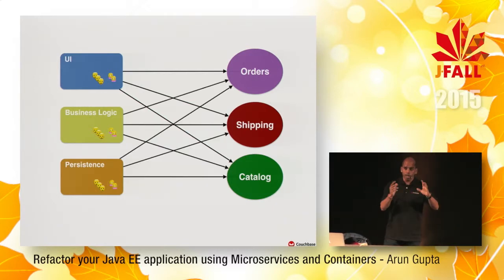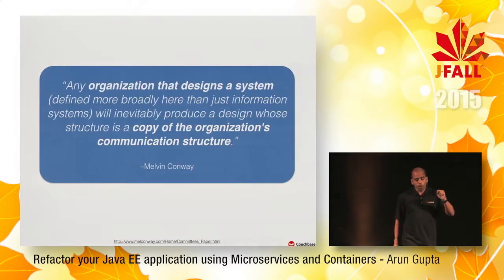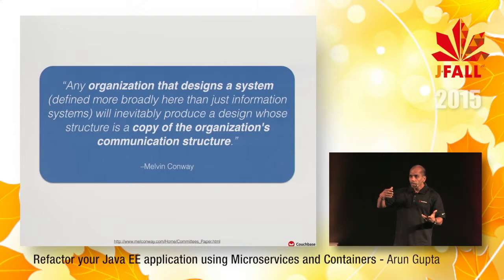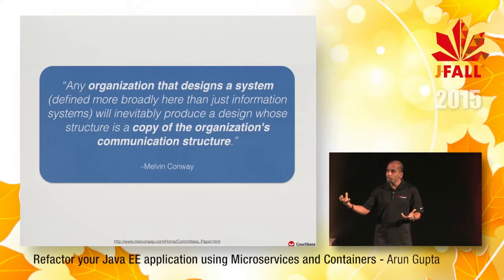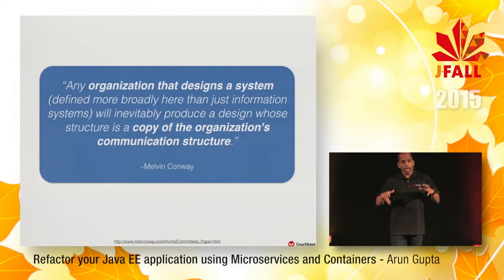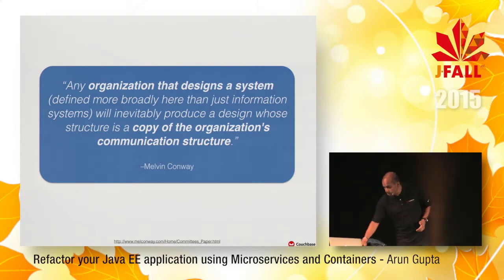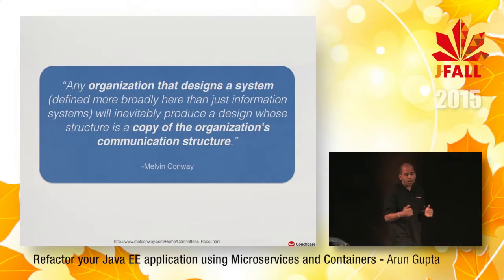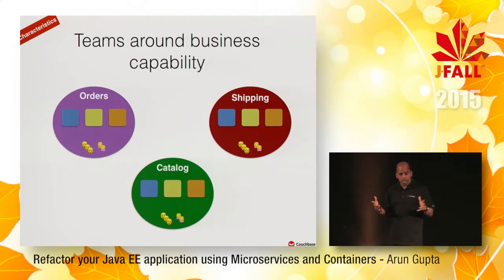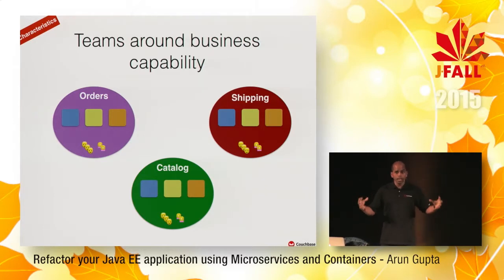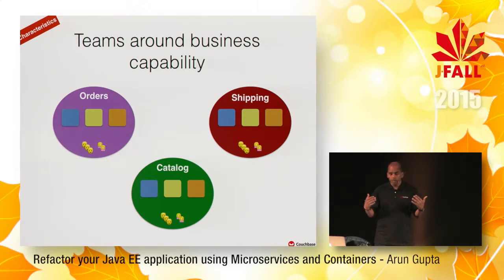A microservices talk without Conway's Law would be irrelevant. Conway's Law says your application code very closely mimics your organizational structure. The application may look okay but the maintenance would be horrible — you could easily smell whether code is coming from the UI team or persistence team, and there is an impedance mismatch. The first characteristic of microservices is that teams are built around business capability: an orders team, shipping team, catalog team — all full-stack teams with UI, business, persistence, and full ops.